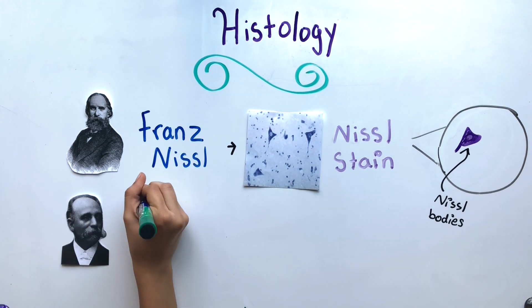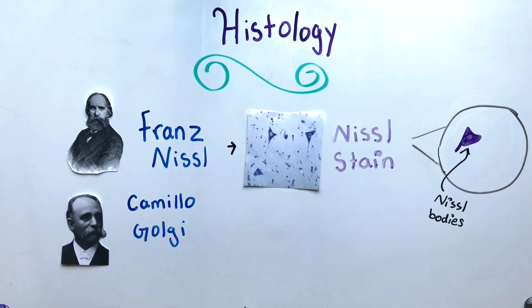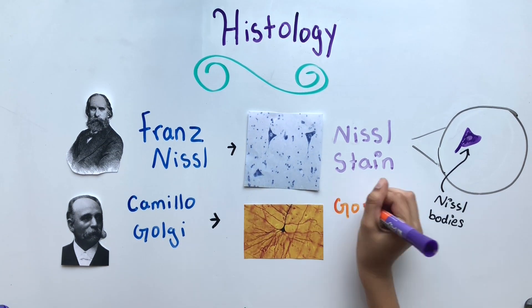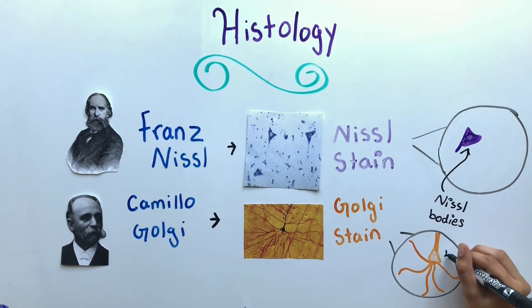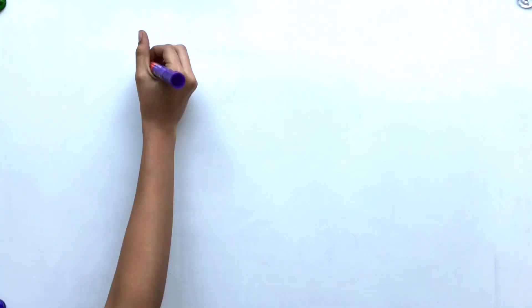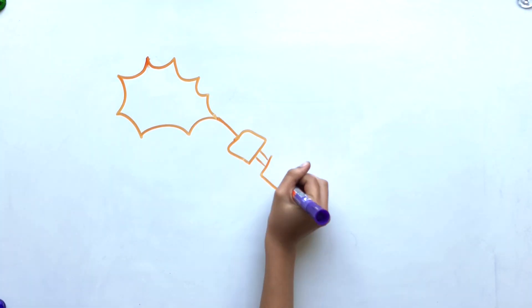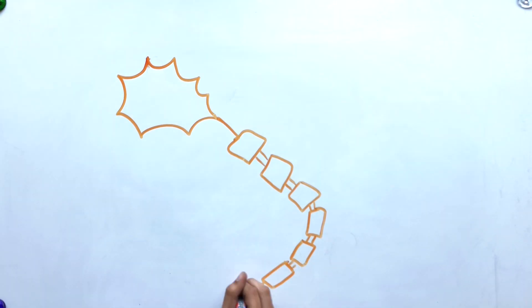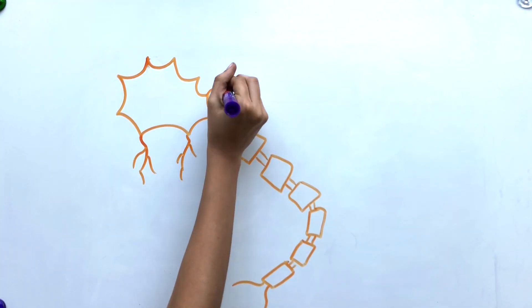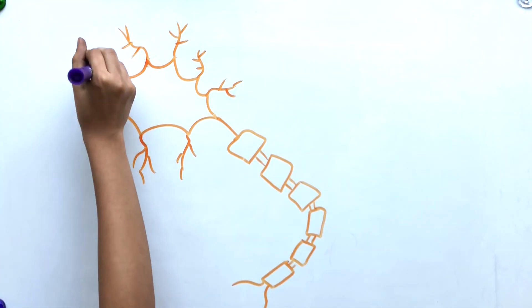Later on, Italian histologist Camilo Golgi used a silver chromate solution to create the Golgi stain, which focused on the neuronal cell body. Golgi stains help determine the definitive characteristics of neurons, including a central region which contains the nucleus and thin tubes that extend from the center.